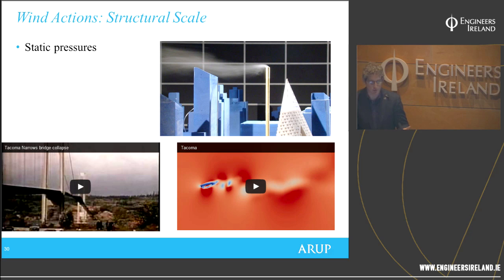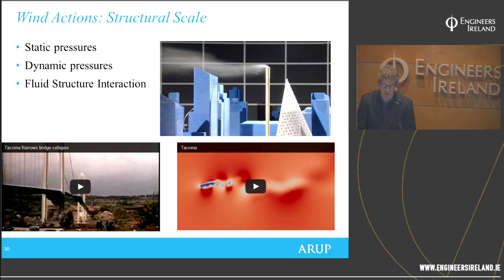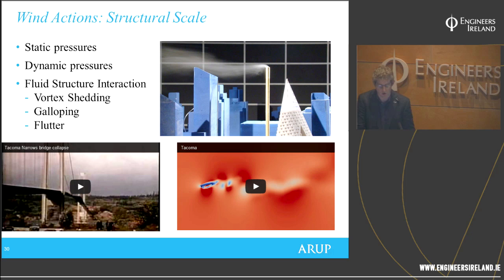When we talk about the structural scale, whether using wind tunnel testing or CFD, we can look at static pressure — forces acting on the building — as well as fluctuations acting on the building. In terms of fluid-structure interaction, this includes vortex shedding where vortices are shed off the building, galloping where there are large oscillations, or flutter — the phenomenon that brought down the Tacoma Narrows Bridge.